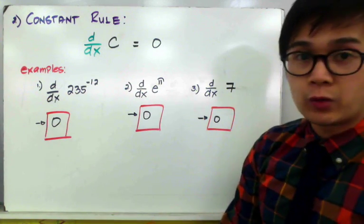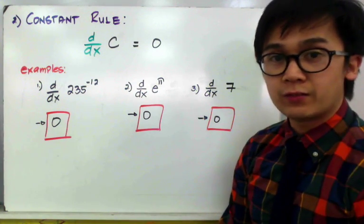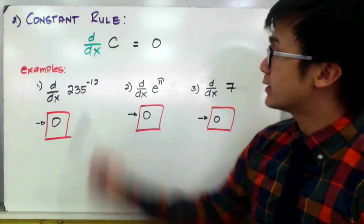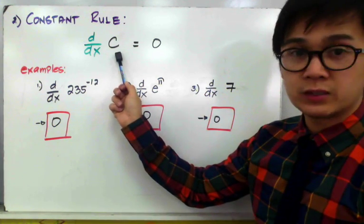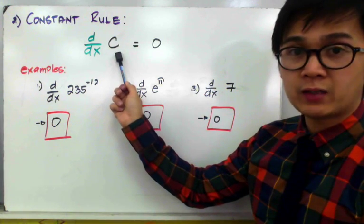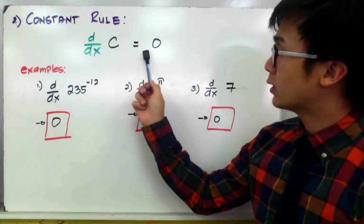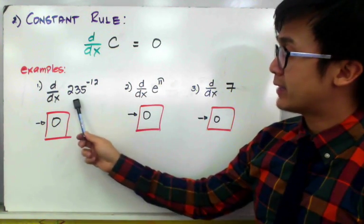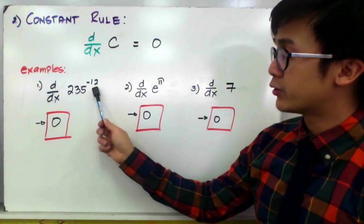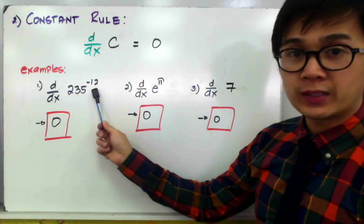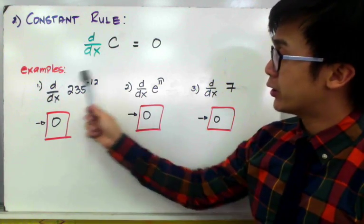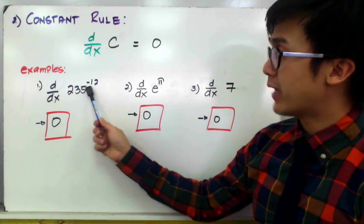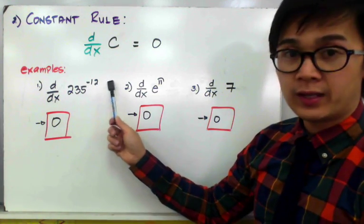The second rule that we're going to use is the constant rule. Given a constant c, if we're going to find the derivative of any constant, it's always equal to 0. For example, 235 raised to negative 12 — the derivative of this particular term is only equal to 0 because 235 raised to negative 12 is a constant.